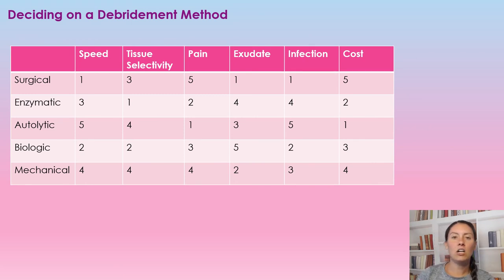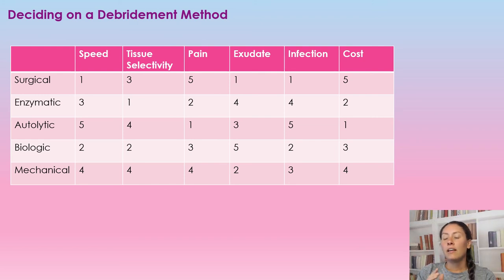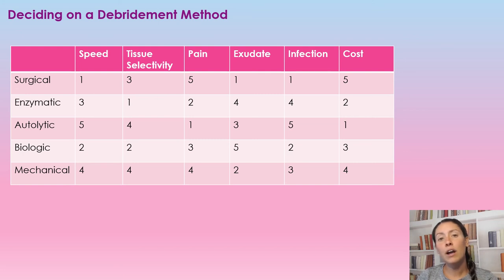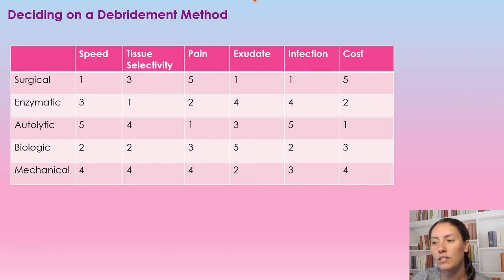I've added a comparison chart here that covers all the different debridement methods, each rated from one to five — one being most desirable and five being least desirable — across categories including speed, tissue selectivity, pain, exudate management, infection risk, and cost. For example, surgical debridement is rated fastest for speed, while autolytic is the slowest. Feel free to pause the video to look at this chart — it's a great resource from the Chronic Wound Care book.